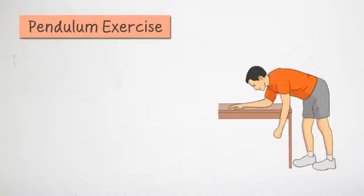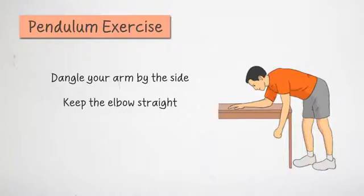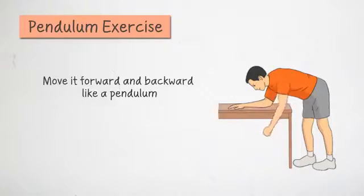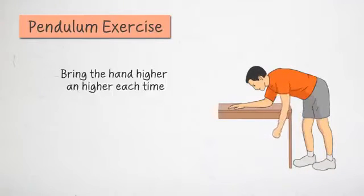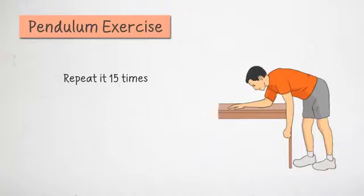Pendulum exercise, forward elevation. Dangle your arm by the side. Keep the elbow straight. Move it forward and backward like a pendulum. Bring the hand higher and higher each time. Repeat it 15 times.